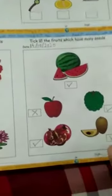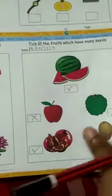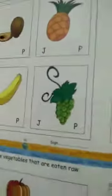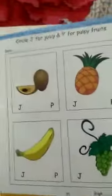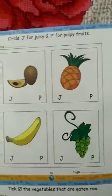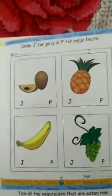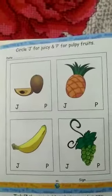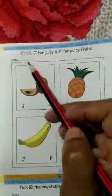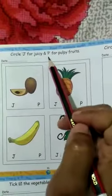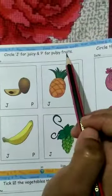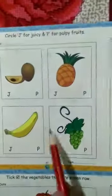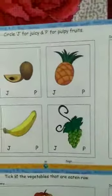So this page is your class work. Now turn the page to page number 30. This page is your homework. What you will do here: circle J for juicy fruit and P for pulpy fruit.